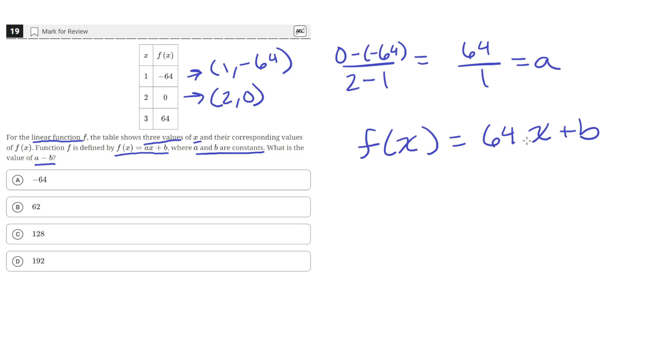But we know that for an x value of, say, 2, the f(x) value is 0. So f(x) is 0 when 64 times x equals 2 plus b. So then 0 equals 64 times 2 is 128 plus b. So then b is equal to negative 128.